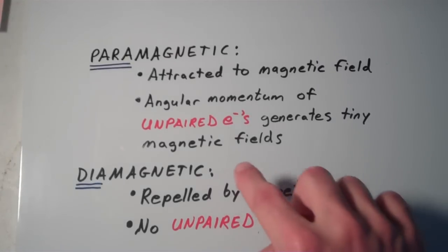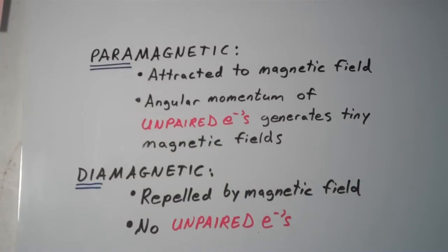In contrast, we have diamagnetic substances which are repelled by a magnetic field and contain no unpaired electrons. It's very easy. Once you do the molecular orbitals, you look and see if there's any unpaired electrons. If there is at least one unpaired electron, then you have a paramagnetic substance that will be attracted to a magnetic field. If you don't have any unpaired electrons at all, then you have a diamagnetic substance that will be repelled by a magnetic field.